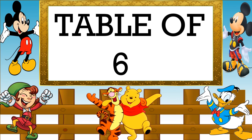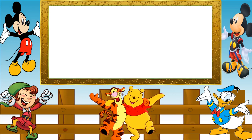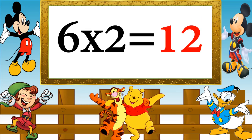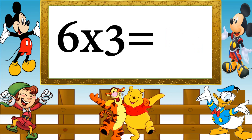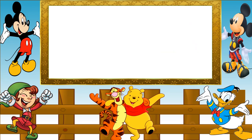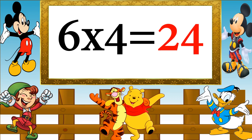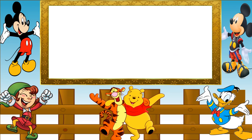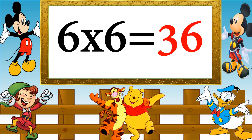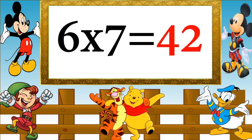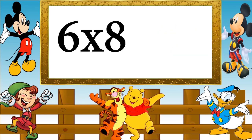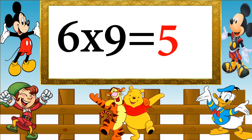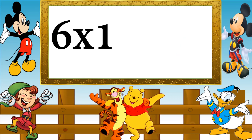Table of 6. 6 ones are 6, 6 twos are 12, 6 threes are 18, 6 fours are 24, 6 fives are 30, 6 sixes are 36, 6 sevens are 42, 6 eights are 48, 6 nines are 54, 6 tens are 60.